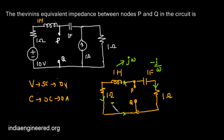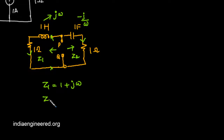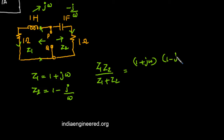Let Z1 be the impedance of the first branch and Z2 be the impedance of the second branch. That means Z1 equals 1 + jω and Z2 equals 1 − j/ω. The equivalent impedance of two parallel elements is Z1·Z2 divided by Z1 + Z2, which gives (1 + jω)(1 − j/ω) divided by (2 + jω − j/ω).